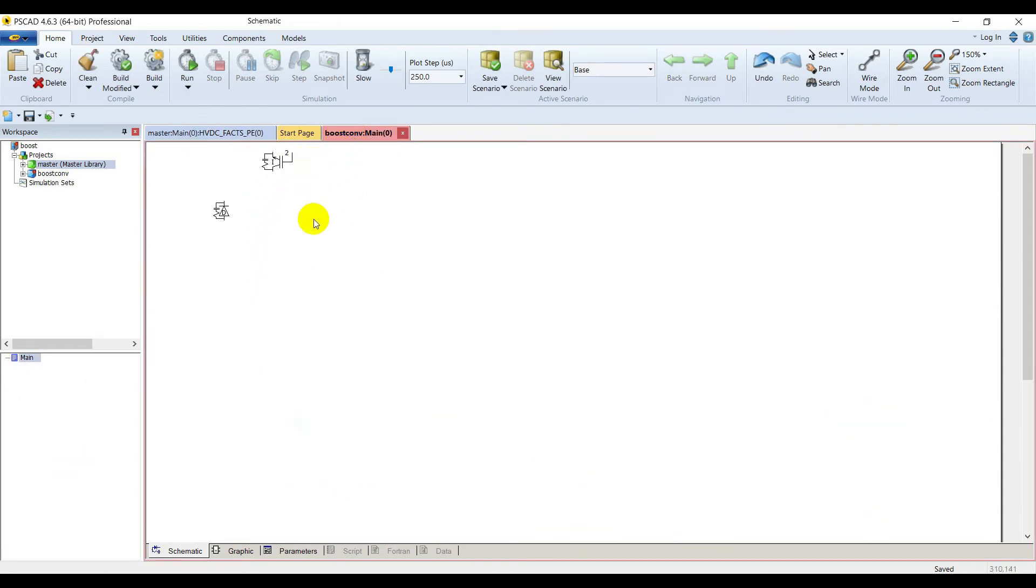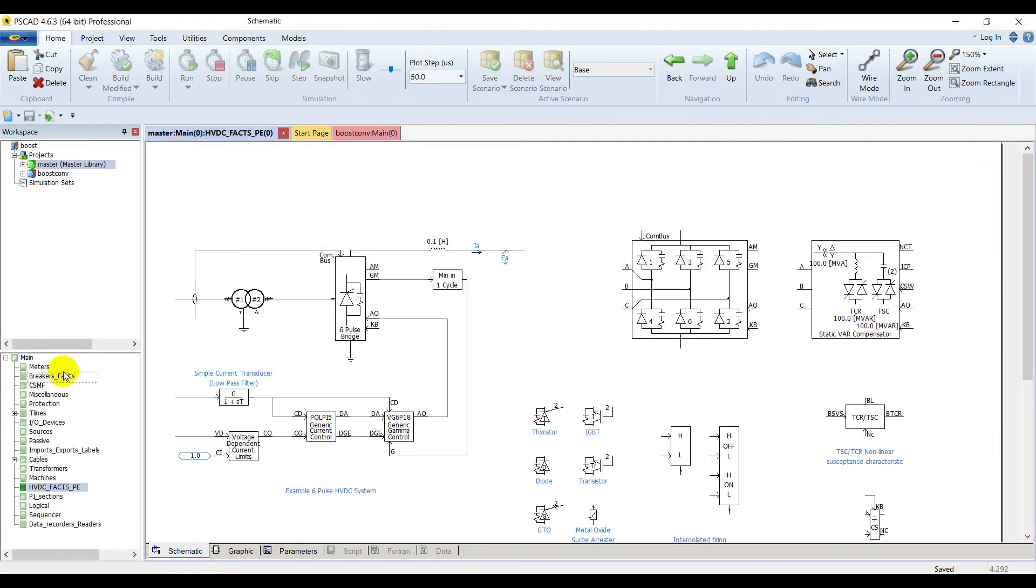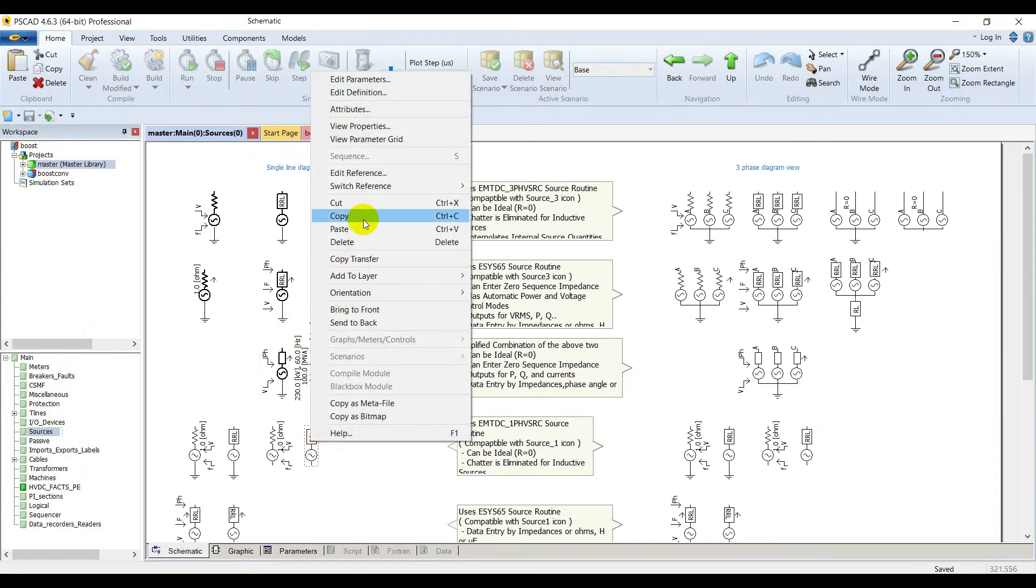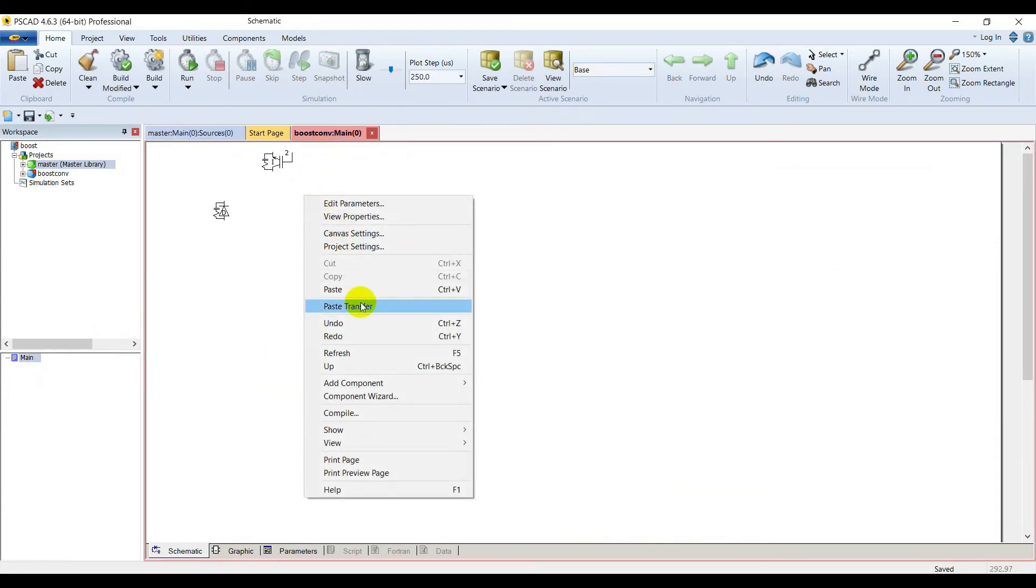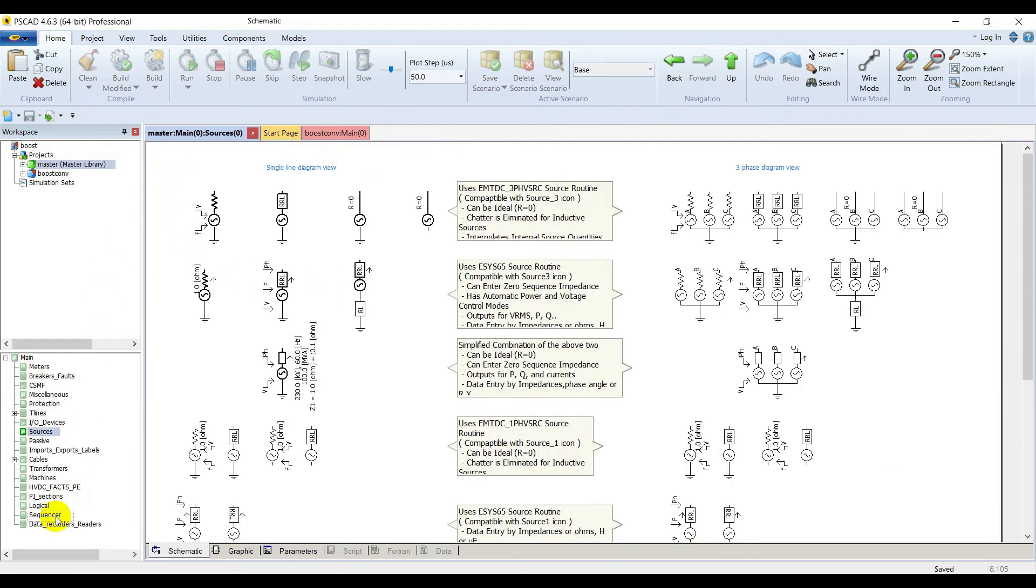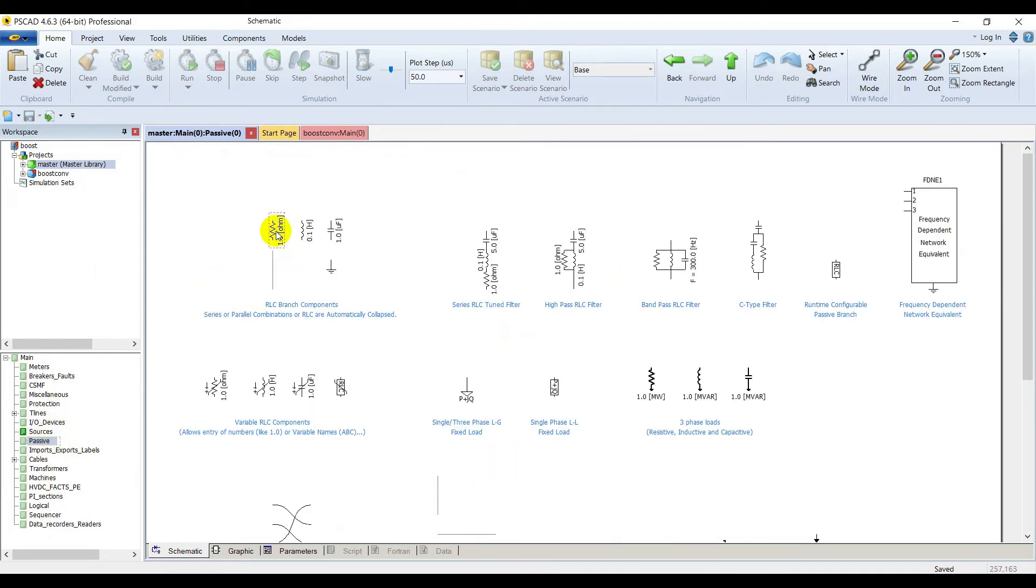In this way we are going to find other elements in other libraries. Go to sources and select this source. Go to passive elements, select a load resistor, an inductor, a capacitor.